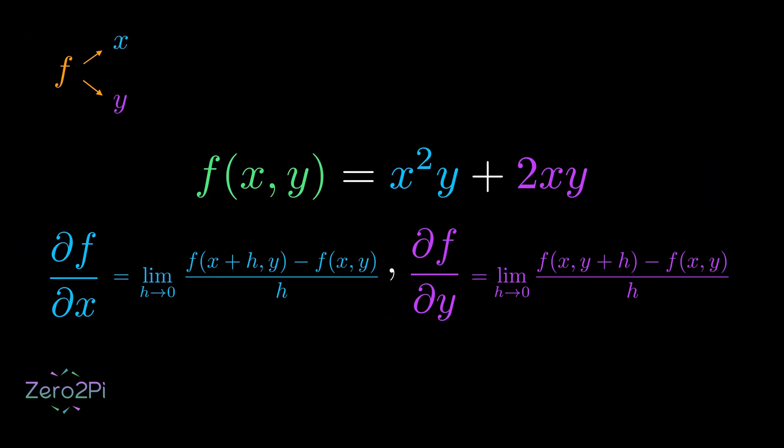Now, let's actually calculate these partial derivatives for our specific function. For the partial derivative with respect to x, we treat y as a constant and differentiate the equation with respect to x. The derivative of x²y is 2xy and the derivative of 2xy is 2y. So, we get 2xy plus 2y.